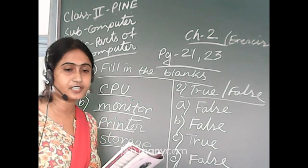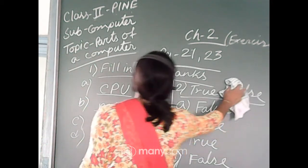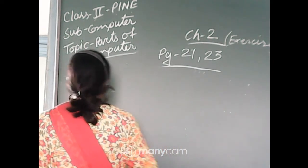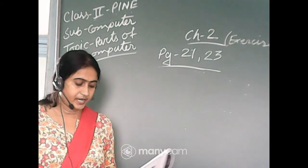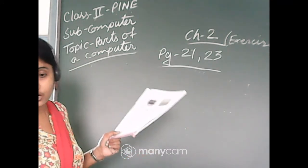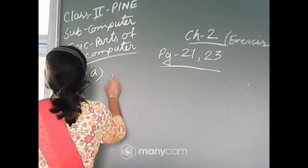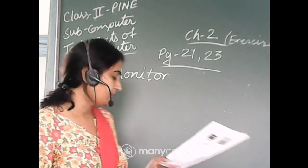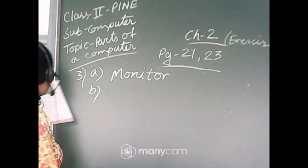Next, very short answer type questions. Number 3A: name the part of a computer which looks like a television. Write down the answer on chat. Yes — monitor. Correct, Potushna, Reza, Shoptoshi. Shoptoshi, your spelling is wrong — M-O-N-I-T-O-R, not E-R. Correction. Number 3B: how many buttons does a mouse have? Correct, Ovidu — two. There are two buttons.